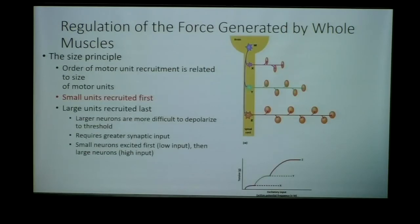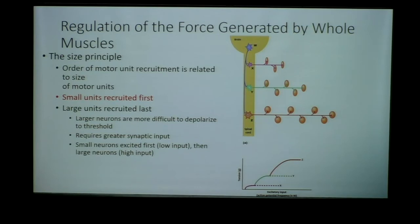When we look at recruitment, there's a size principle: in order to recruit additional motor units, we must recruit the smallest units first. Larger units take too much energy to depolarize — a larger neuron requires more energy to sustain an action potential down its length, so we recruit it last. We recruit smaller motor units — with smaller fibers, smaller fiber diameter, and smaller axon diameter — before recruiting large motor units with larger fiber diameters, larger axon diameters, and more fibers. Smaller neurons are easier to excite and take less energy, making this order much more efficient.